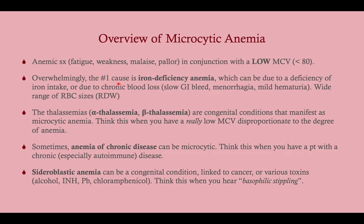Overwhelmingly, the number one cause of microcytic anemia is iron deficiency. If you've got iron deficiency in a younger woman, think menorrhagia. If you have iron deficiency in an older person, think cancer of the colon. It's very important with iron deficiency anemia to work up the underlying cause — get a good history, ask about melena in the stools, check a fecal occult blood test, and if it's a younger woman, ask about her menstrual periods.